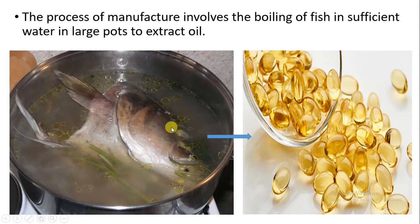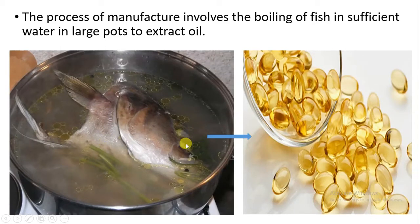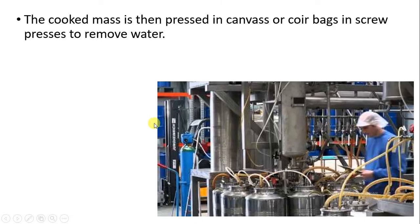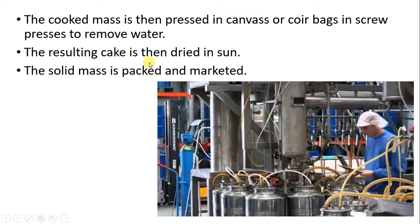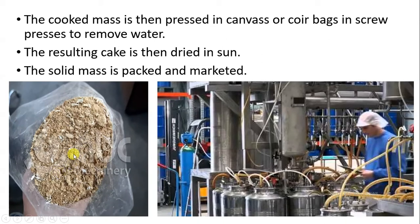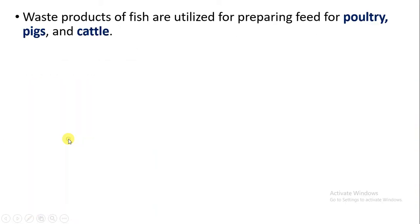Oil is also extracted from the fishes. The fish is boiled in a sufficient large quantity of water in a pot, and because of the boiling process the oil is extracted from it. Further, the cooked mass is pressed in canvas or core bags in screws so that more pressing takes place and water is removed. A cake is produced which is dried in the sun, and this solid mass is packaged and later marketed.